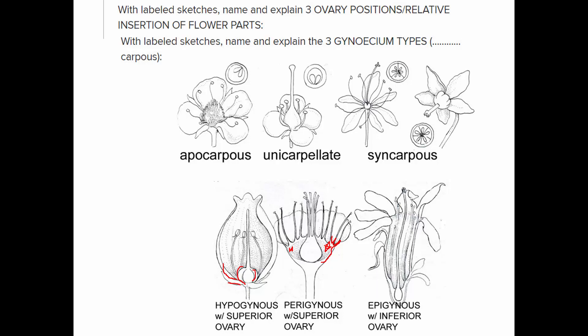Another arrangement is perigynous, meaning around the gynoecium: the sepals, petals, and bases of the stamens are fused together into a common structure called the hypanthium. And when the hypanthium is fused with the ovary, the sepals and petals rise off the flower above the ovary — that is called an inferior ovary.